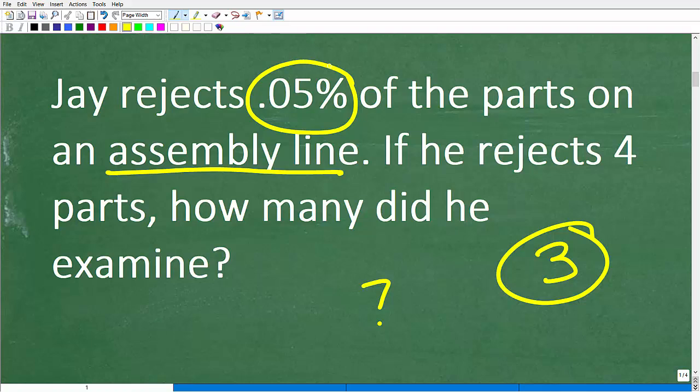What do you think we should do here? We have this problem. Jay rejects 0.05% of the parts on the assembly line. If he rejects four parts, how many did he examine? Now, some of you already know what to do. You probably could just hit your calculator out and calculate the correct answer. And that's fantastic.